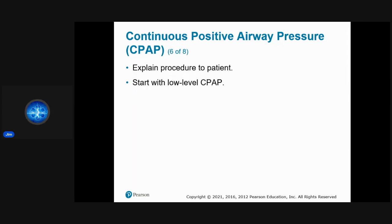To use CPAP, explain it to the patient — tell them it will be a tight seal around the face. Start with a low level of CPAP, usually 5 cmH2O of PEEP, then work up to 10. If the patient is maintaining or getting better at 5, leave it there.